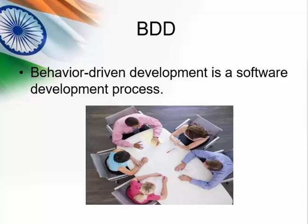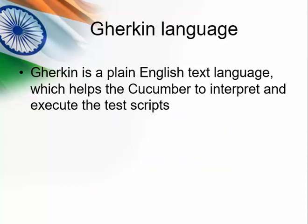In order to achieve BDD, we need a tool and a language. The tool is Cucumber and the language is Gherkin. We write the requirement in simple English using some keywords so that everyone understands the requirement 100% clearly. This file is the input to Cucumber to interpret and execute the test script.